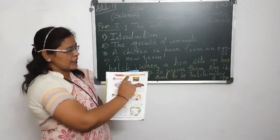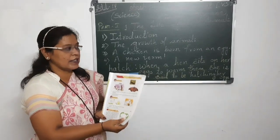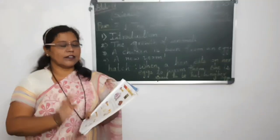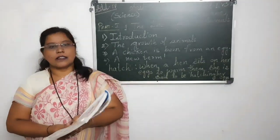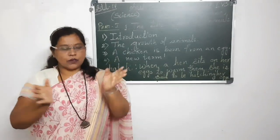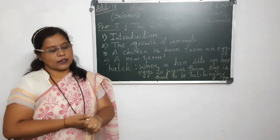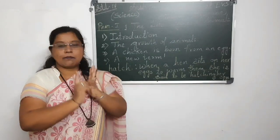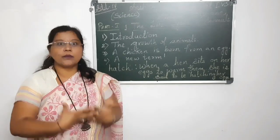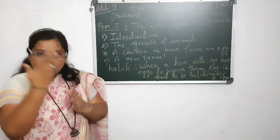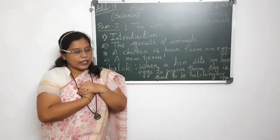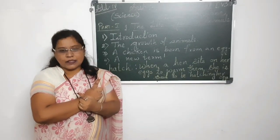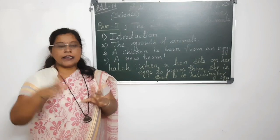The first lesson is the life cycle of animals. Let me check your previous knowledge from third standard. There are two types of things: living things and non-living things. Living things means all living things like plants, animals, and human beings. We are also called human animals — you are a living thing, I am a living thing. Plants, animals, and all living things on the world are called living things.